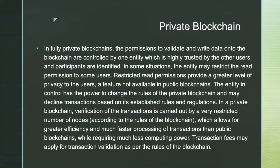In a fully private blockchain, the permission to validate and write data onto the blockchain is controlled by an entity that is highly trusted by the other users, and participants are identified. In some situations, the entity may restrict read permissions to certain users, providing a greater level of privacy — a feature not available in a public blockchain. The entity in control has the power to change the rules of the private blockchain and may decline transactions based on established rules and regulations.